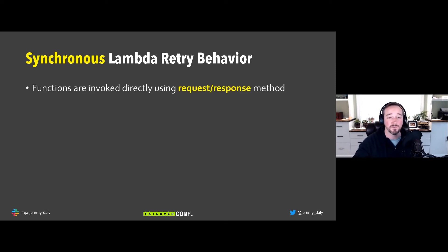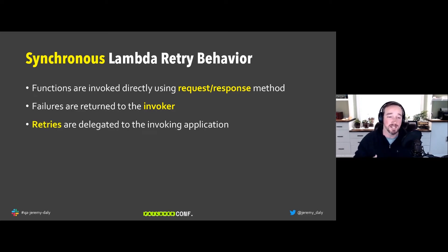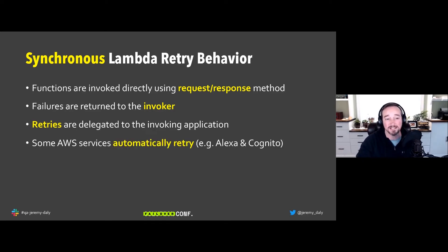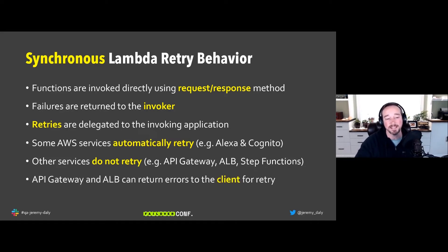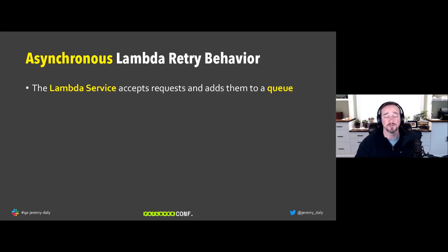For synchronous Lambda invocations, functions are invoked directly using request/response, and failures are returned back to the invoking service — retries are delegated to that application. Some AWS services automatically retry synchronous Lambda, like Alexa Skills or Cognito. But API Gateway and Step Functions do not retry — you have to build that logic yourself. API Gateway and Application Load Balancer can return errors directly back to the client.